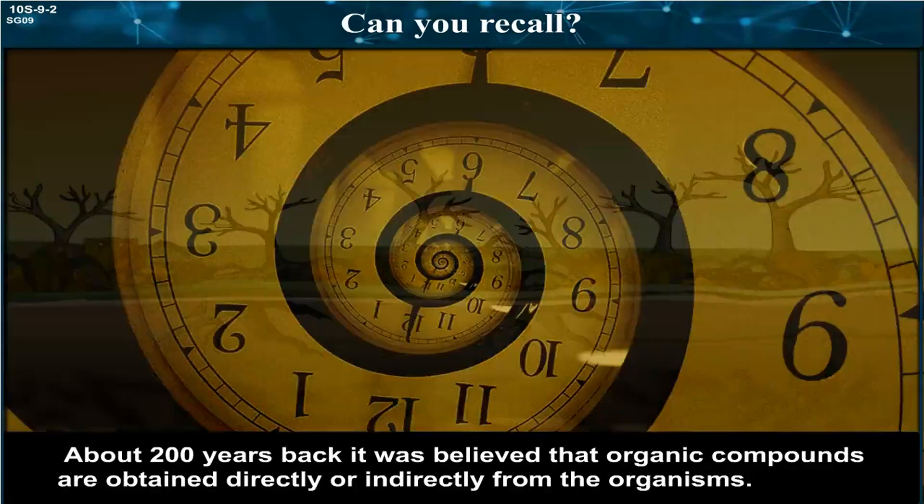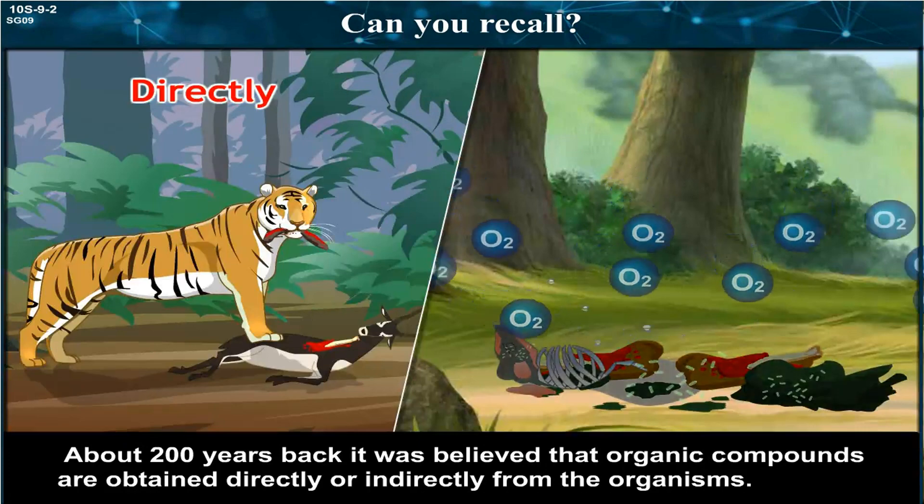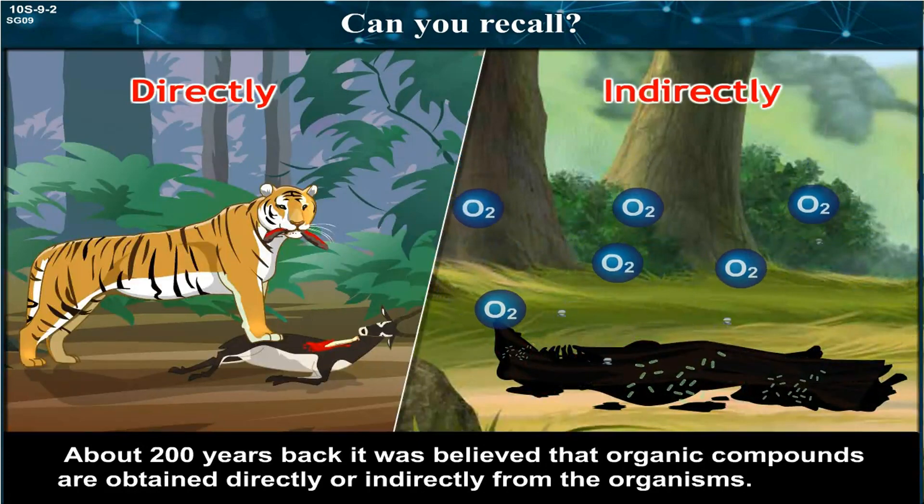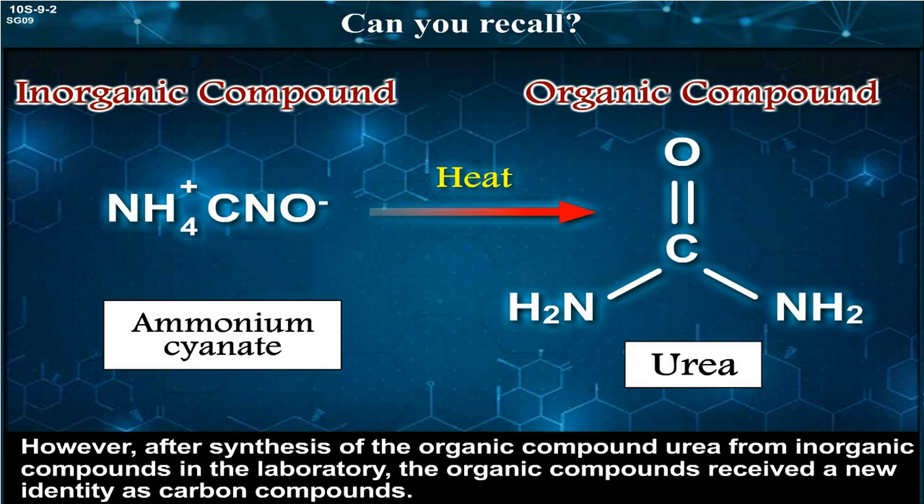About 200 years back, it was believed that organic compounds are obtained directly or indirectly from the organisms. However, after synthesis of the organic compound urea from inorganic compounds in the laboratory, the organic compounds received a new identity as carbon compounds.